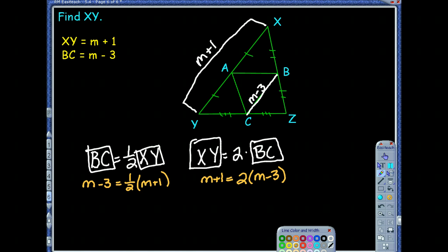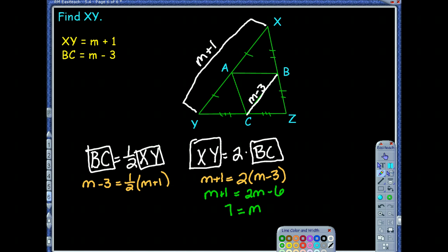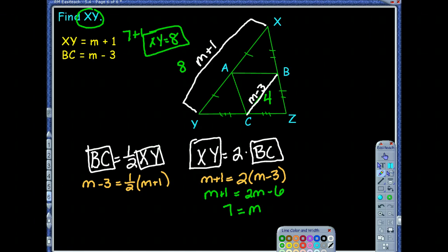Distributing gives M plus 1 equals 2M minus 6, so M equals 7. But M isn't the answer — we need XY. Substituting back: XY equals 7 plus 1, which is 8. To check: BC equals 7 minus 3 equals 4, and 4 is indeed half of 8. The answer checks out — XY equals 8.